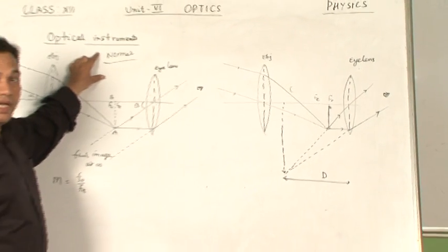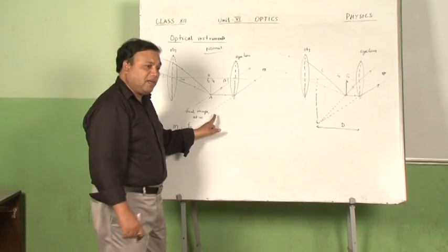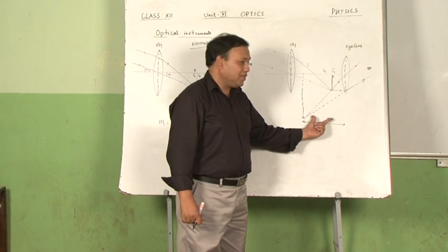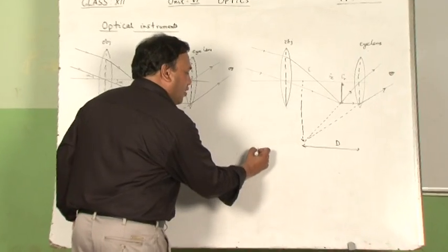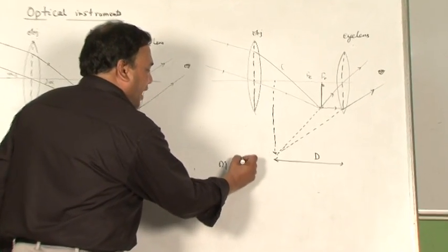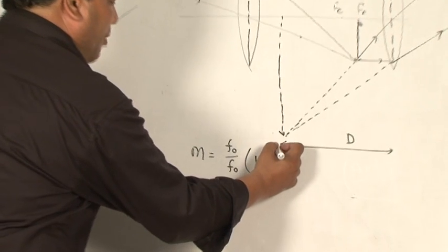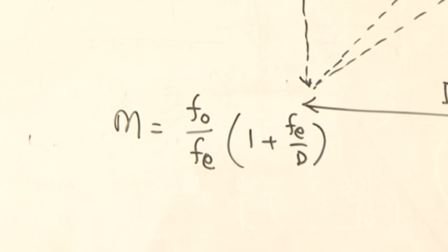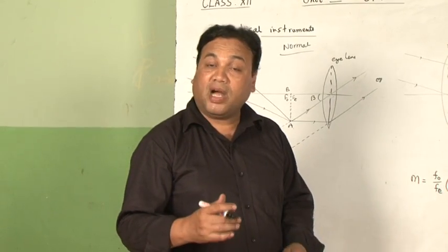This adjustment is called the near point adjustment, because the final image is formed at the least distance of distinct vision, also called the near point. The formula for magnifying power in this case is F-O upon F-E multiplied by 1 plus F-E upon D. These two diagrams are very important and will compulsorily come in the examination. Students, please practice them thoroughly, because ray diagrams with all labeling carry more marks in your board examination.